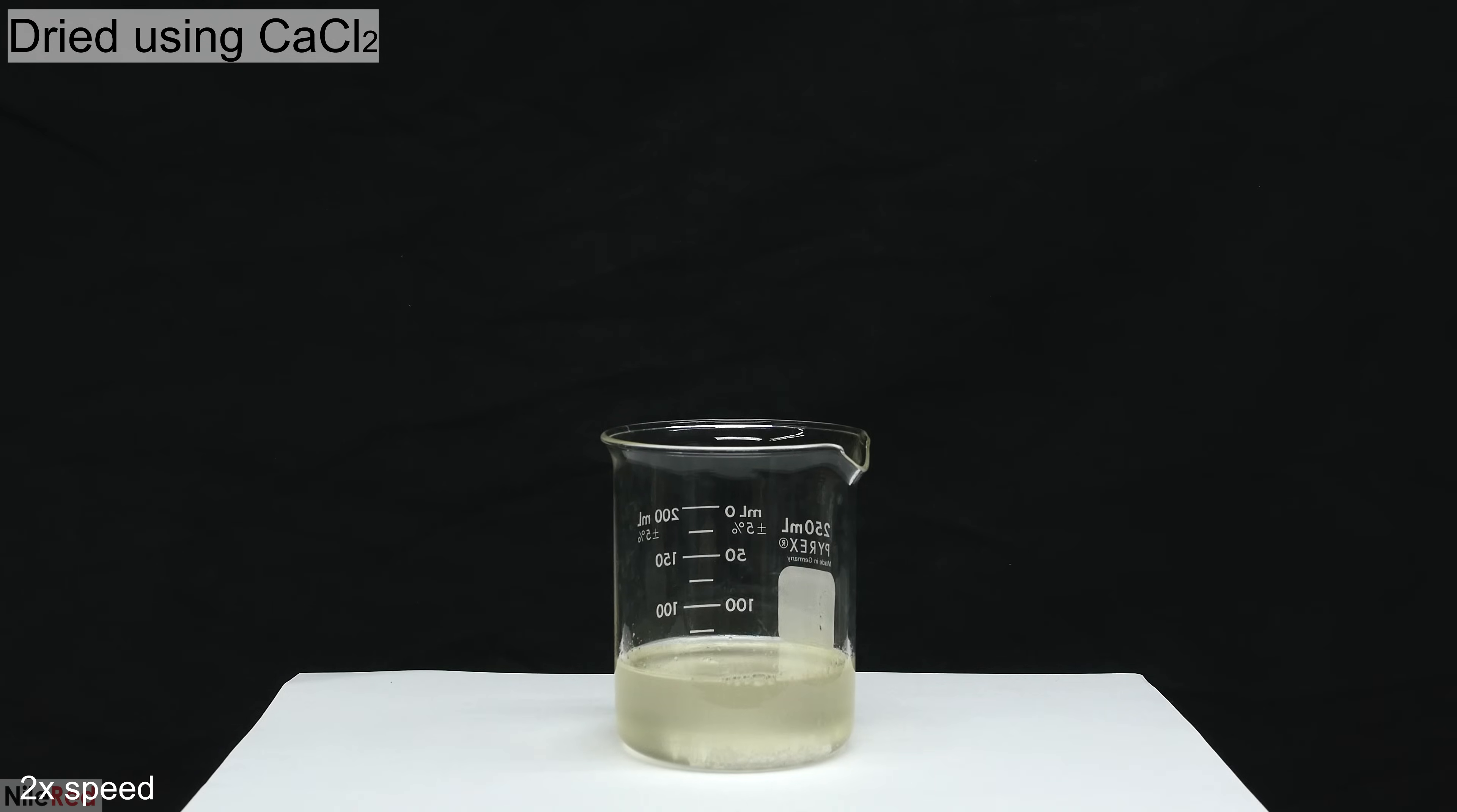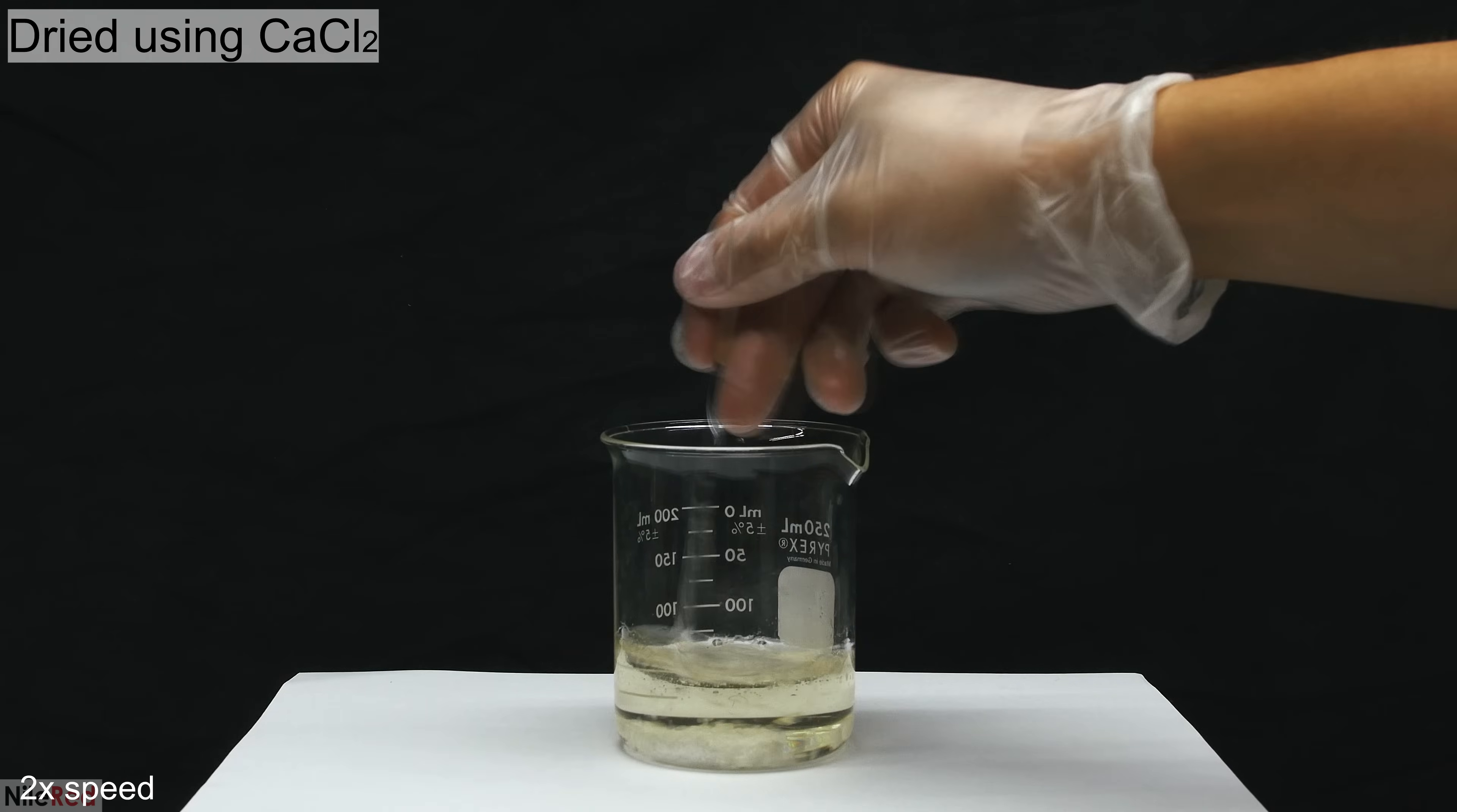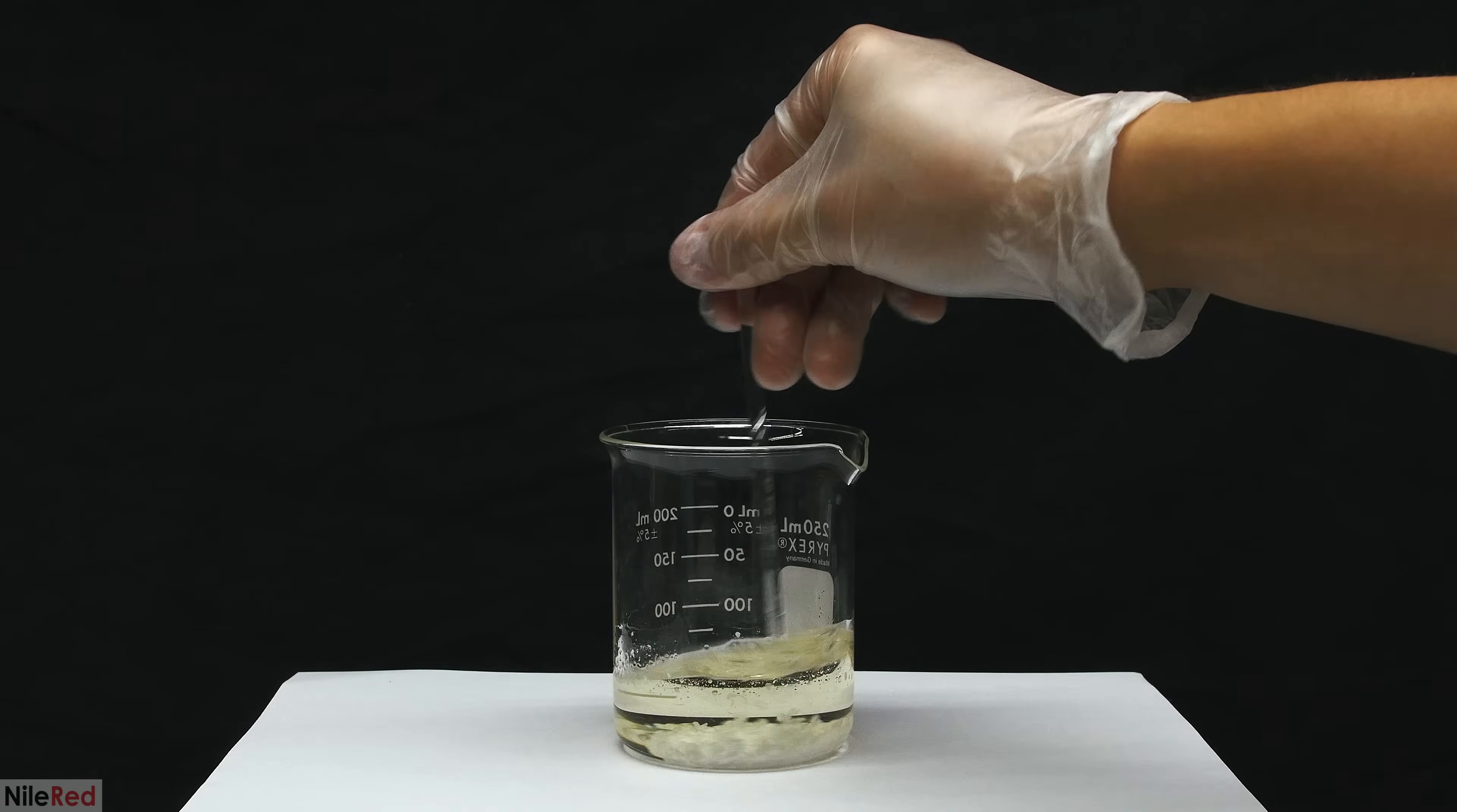In order to clear things up and to dry the DCM, we add in a little bit of calcium chloride. After mixing it around a little bit, we can see that the cloudiness slowly fades. I let it sit for something like 20 or 30 minutes, and when I come back, I'm left with a very clear solution.